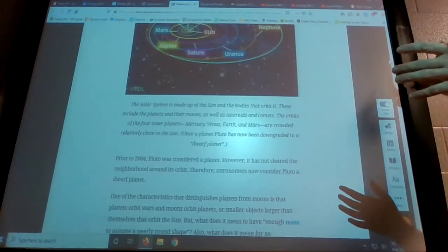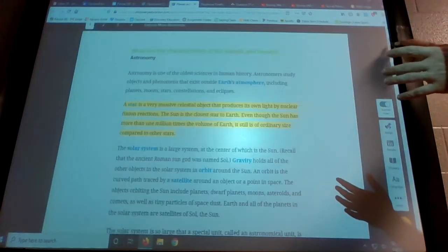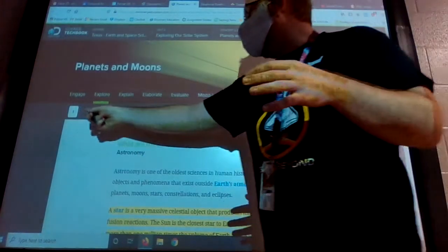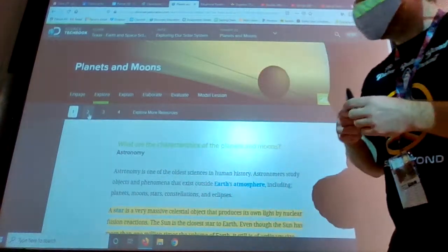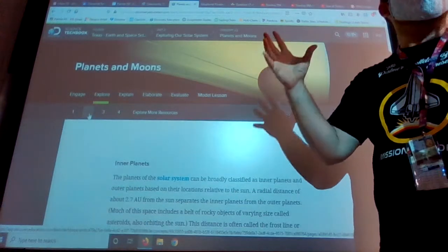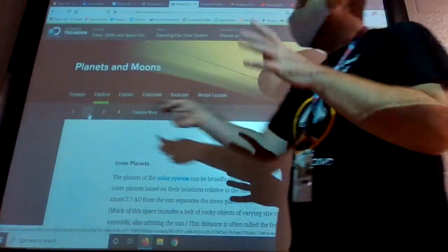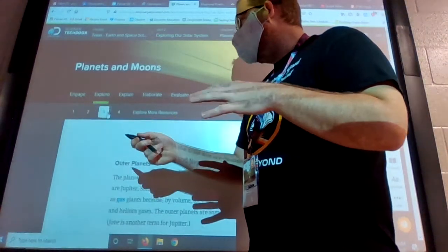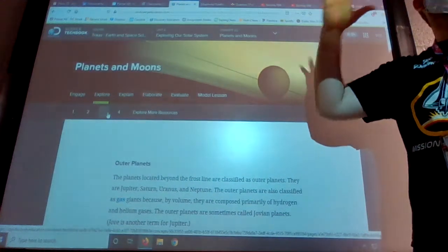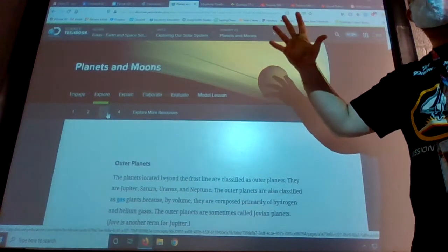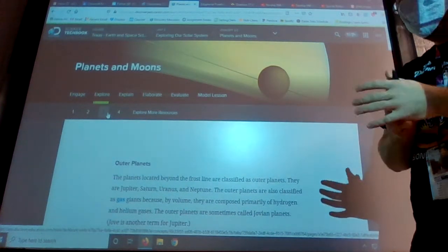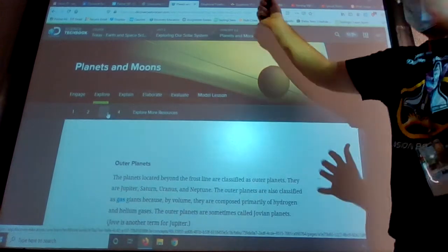It talks about the inner planets and the outer planets and has a couple questions about those. Just remember that your inner planets, which are on page two, are all your small, dense, rocky planets, and they're closer to the sun. Your outer planets, which are on page three, are your big, giant gas giants, which are less dense. They're big gas clouds kind of in a way. And they're further out from the sun.